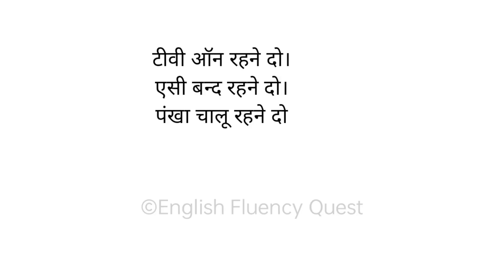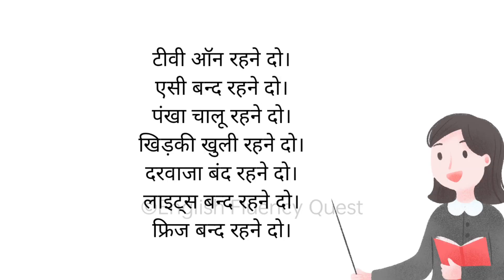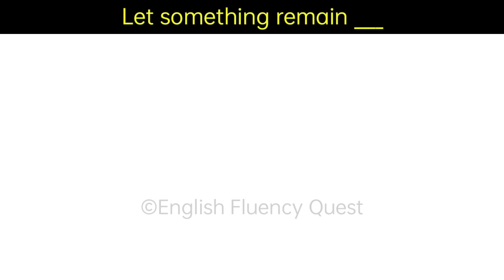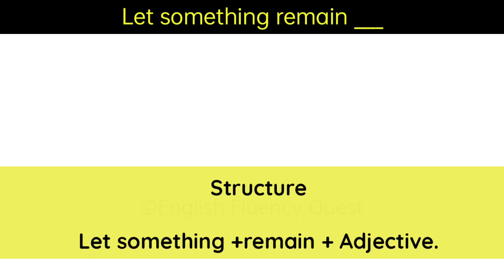So when we have to say sentences like: TV on, AC shut, Pankha chalu shut, Khirki khuli shut, Darwaja shut, Lights shut, Fridge shut — we will use the structure: Let something remain, then adjective. Here we are telling the state of any object, so we are using the adjective.